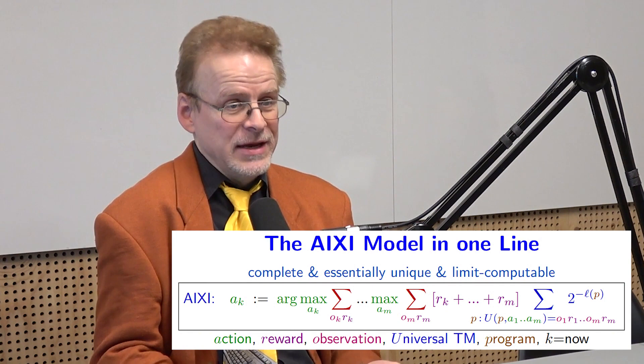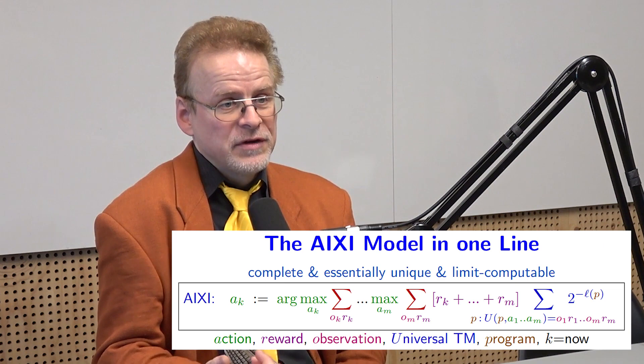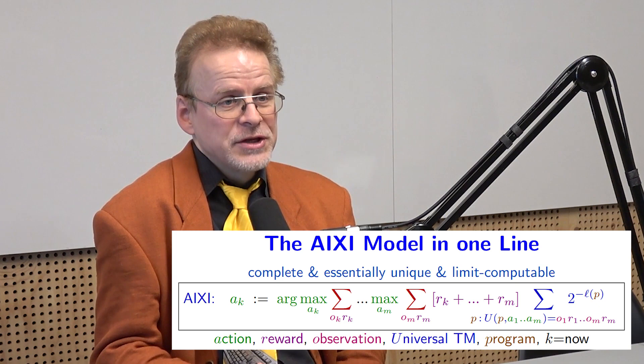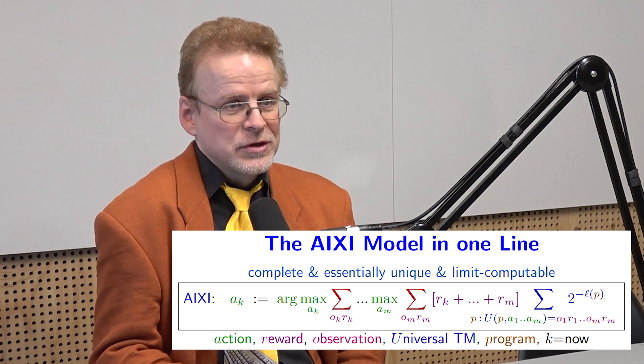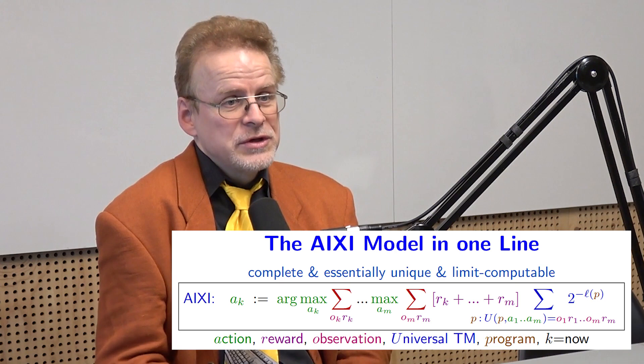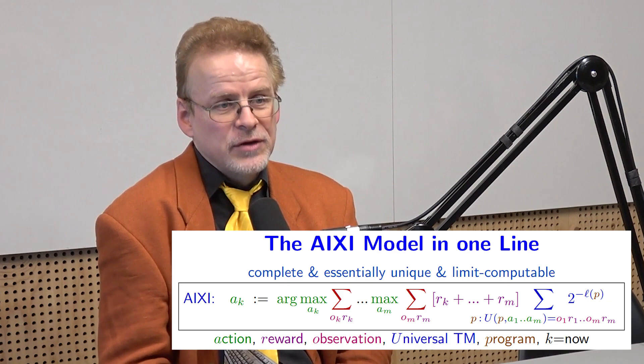So AIXI — what is this mathematical framework at the big level? It consists essentially of two parts: one is the learning, induction, and prediction part, and the other is the planning part. For any agent to act well, it needs to predict what happens. If you have no idea what your actions do, how can you decide which actions are good? You need some model of how your actions affect the world — you build models like scientists from your experience, then use those models for prediction.